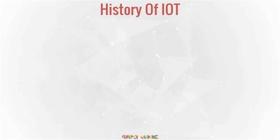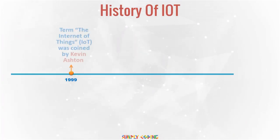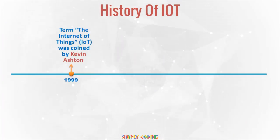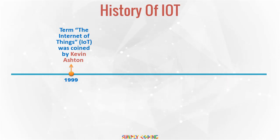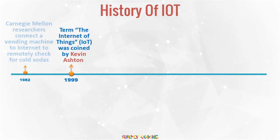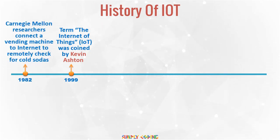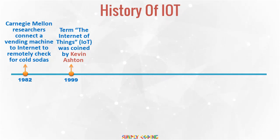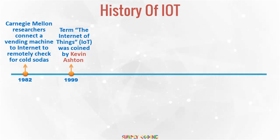Let's look at the history of IoT. The term the Internet of Things was coined by Kevin Ashton in a presentation to Procter & Gamble in 1999. However, even before that, after the Internet was discovered in 1982, Carnegie Mellon researchers were connecting a vending machine to the Internet to remotely check for cold sodas.